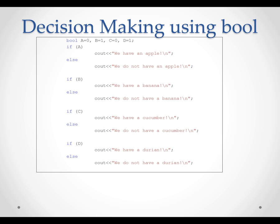Another example on decision making using boolean variables. There are four boolean variables: A, B, C, and D. A equals 1 means we have an apple, and A equals 0 means we do not have an apple. B equals 1 means we have a banana, and B equals 0 means we do not have a banana. C equals 1 means we have a cucumber, and C equals 0 means we do not have a cucumber.